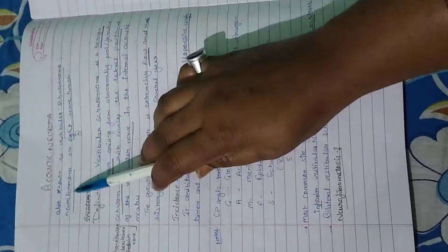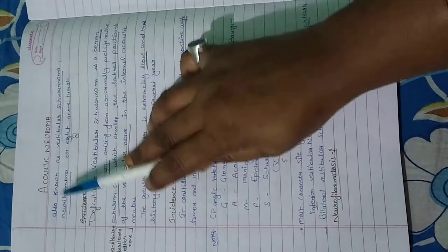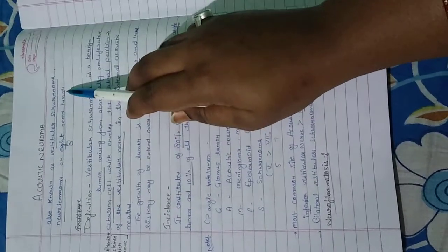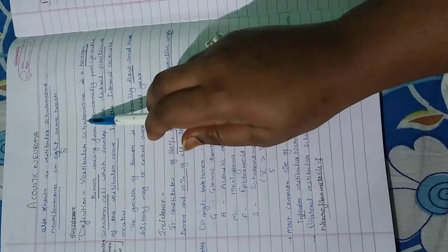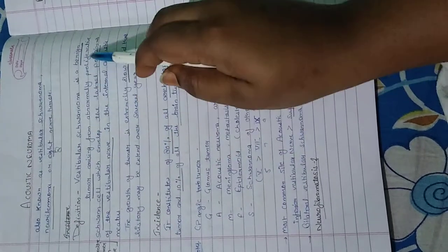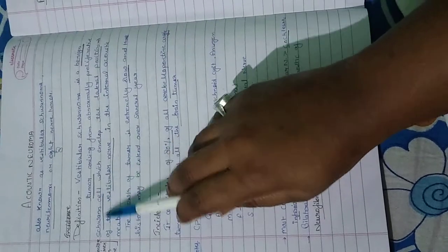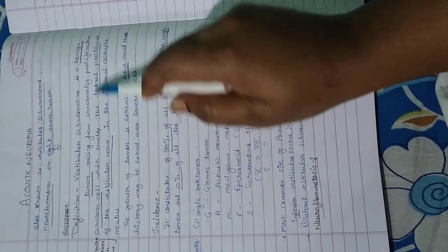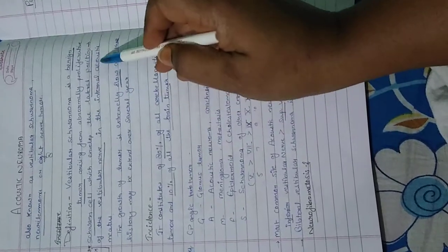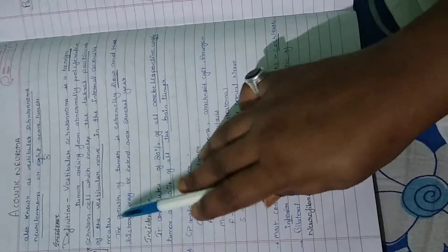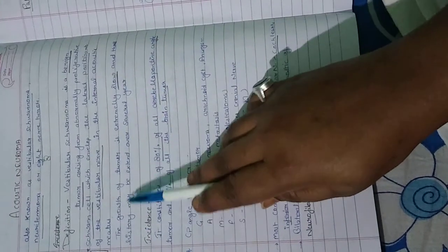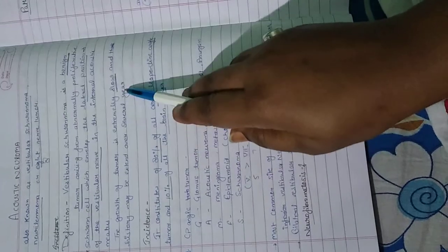Acoustic Neuroma, also known as Vestibular Schwannoma or Neural Neuroma or 8th Nerve Tumor, is a benign tumor arising from abnormally proliferative Schwann cells which develop at the lateral position of the vestibular nerve in the internal acoustic meatus. The growth of tumor is extremely slow and the history may extend over several years.